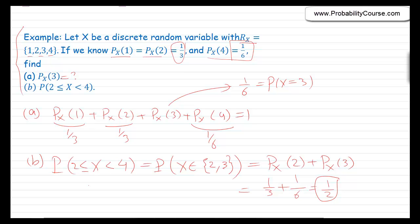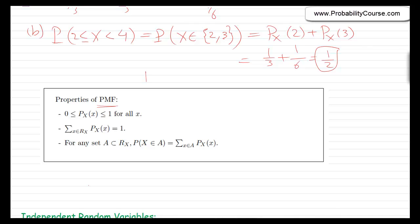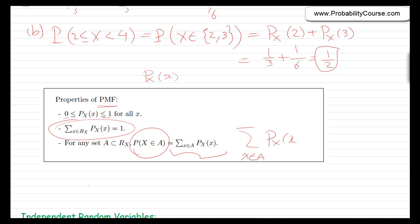From this example we can summarize some properties of the probability mass function. First, px(xk) is a probability, so it must be between 0 and 1. Second, if you sum over all possible values of x, the sum must equal 1. More generally, to find the probability that x belongs to a set A, you compute the sum of px(x) over all x in that set. These are the important properties of the PMF for discrete random variables.